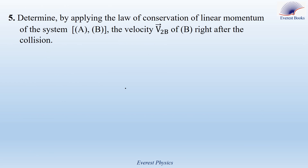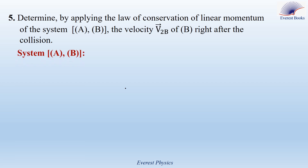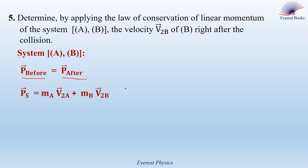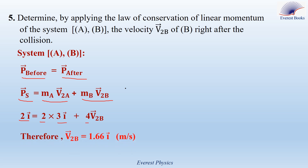Part 5: Determine, by applying the law of conservation of linear momentum of system AB, the velocity V2B of B right after the collision. The linear momentum of the system just before the collision equals that right after the collision. P_before equals P_S equals 2i, and P_after equals M_A × V2A plus M_B × V2B. With M_A = 2 kg, V2A = 3i, and M_B = 4 kg, V2B is equal to 1.66i meters per second.